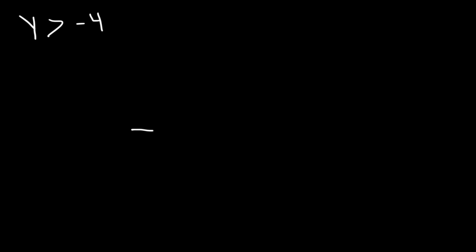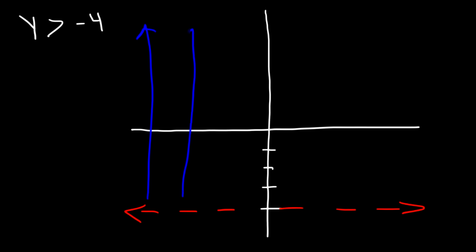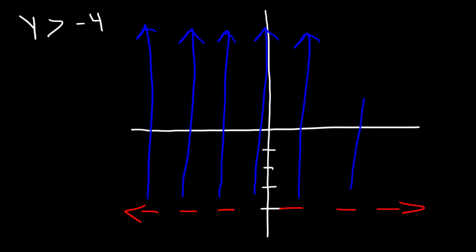Now let's say y is greater than negative 4. How can we graph it and where should we shade? Whenever y is equal to a number, it's going to be a horizontal line as opposed to a vertical line. And because it's greater than but not equal to, it's going to be a dashed line instead of a solid line. The numbers that are greater than negative 4 are above this line, so we need to shade in this region.